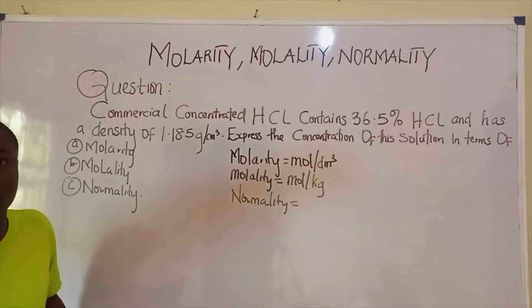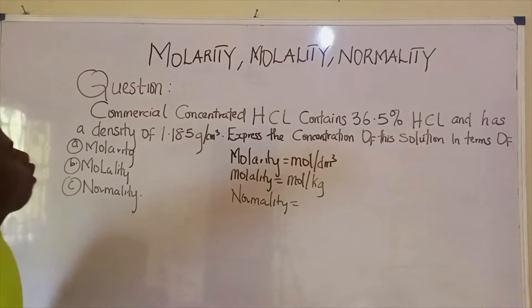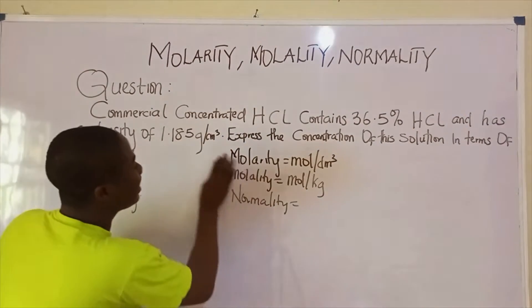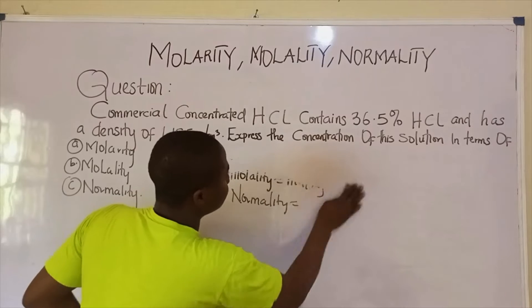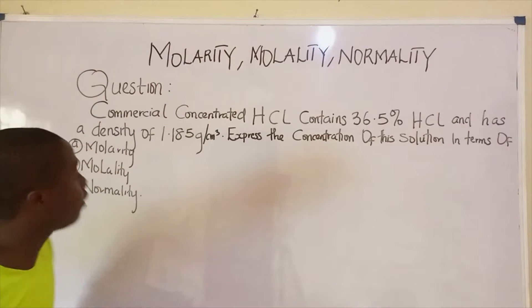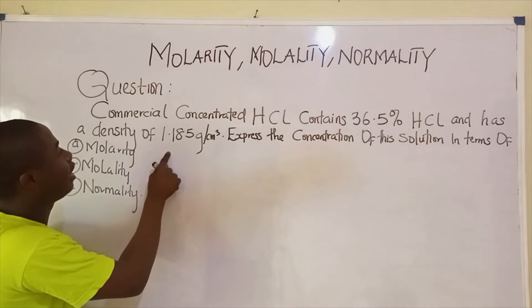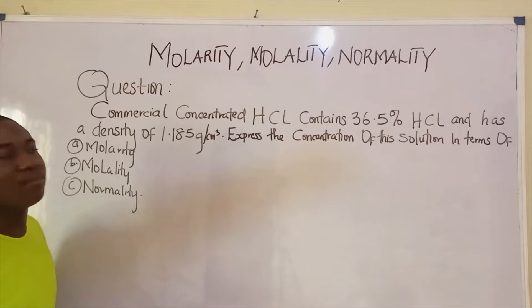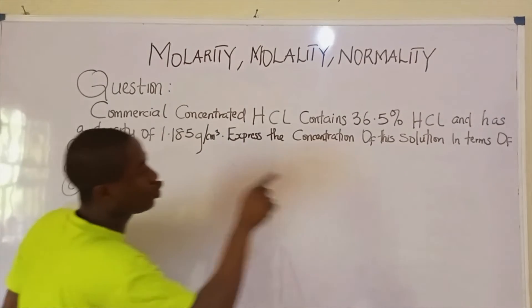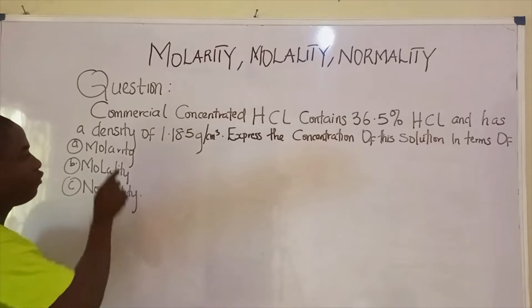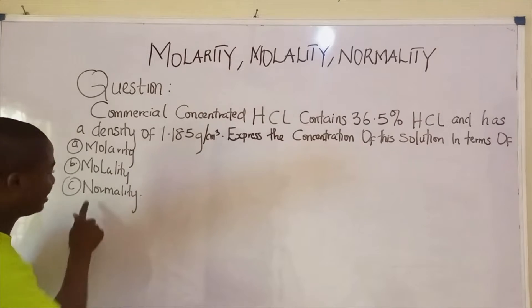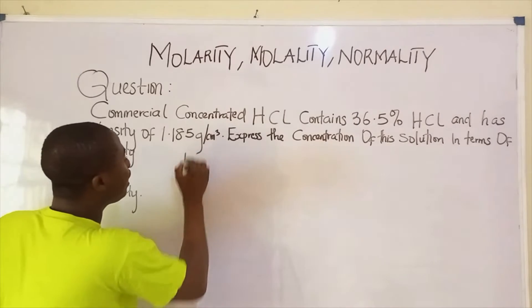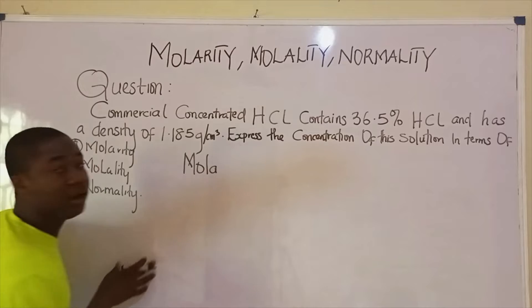There are formulas that will be used when solving problems on this topic. The question says: commercial concentrated HCl contains 36.5% HCl and has a density of 1.185 grams per cm³. Express the concentration of this solution in terms of molarity, molality, and normality. We'll first solve for molarity.